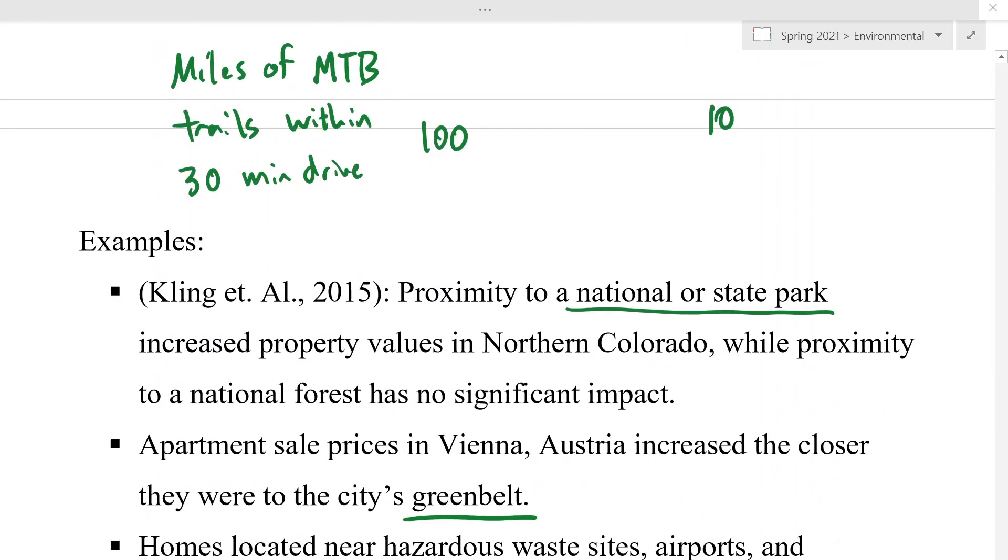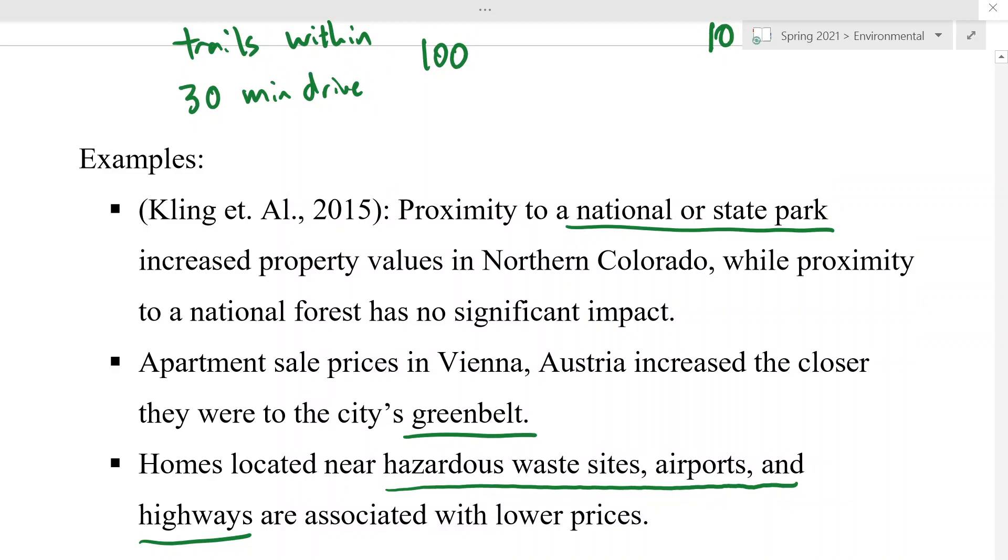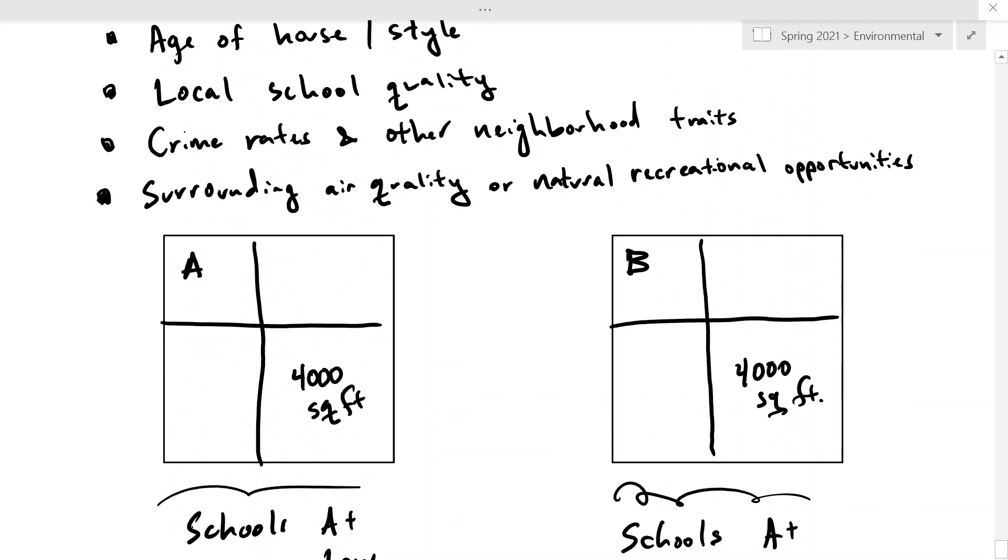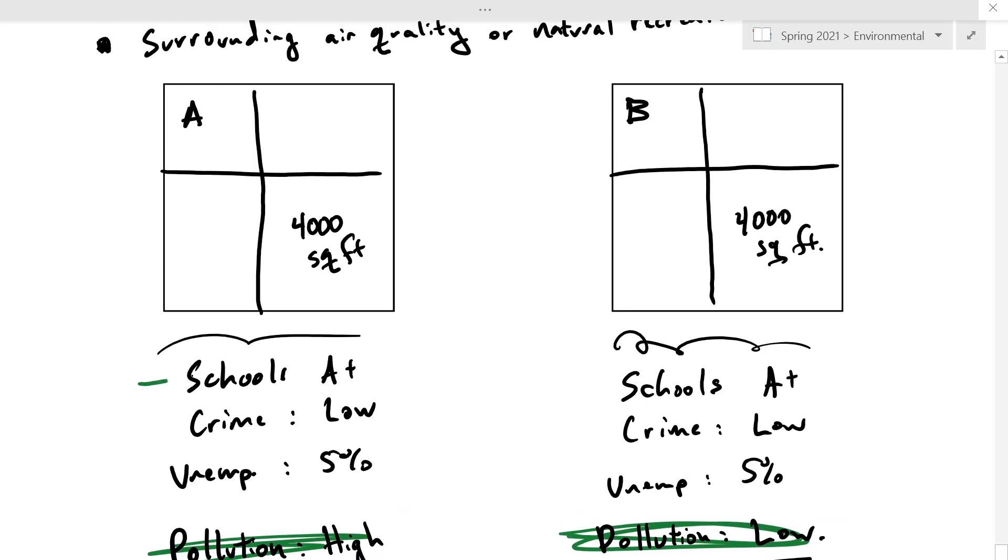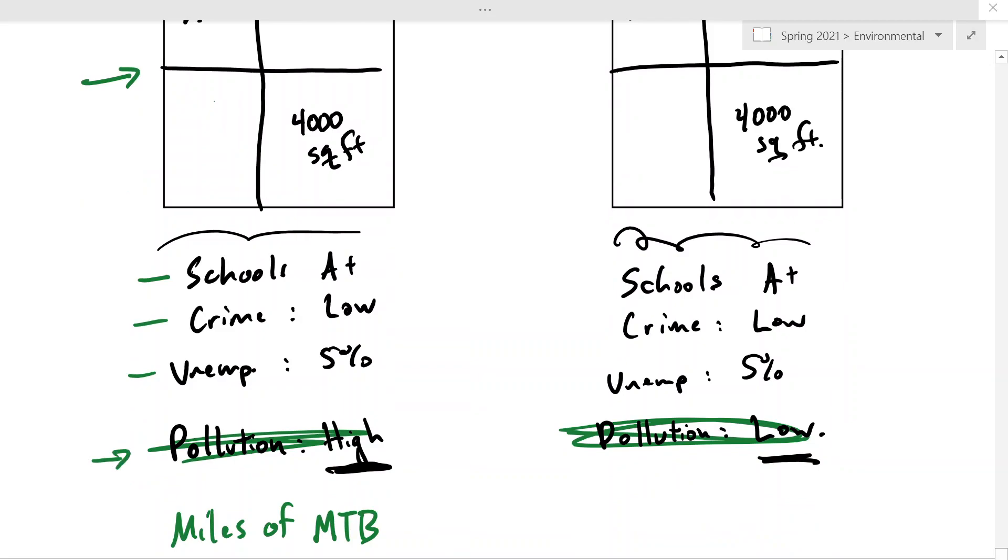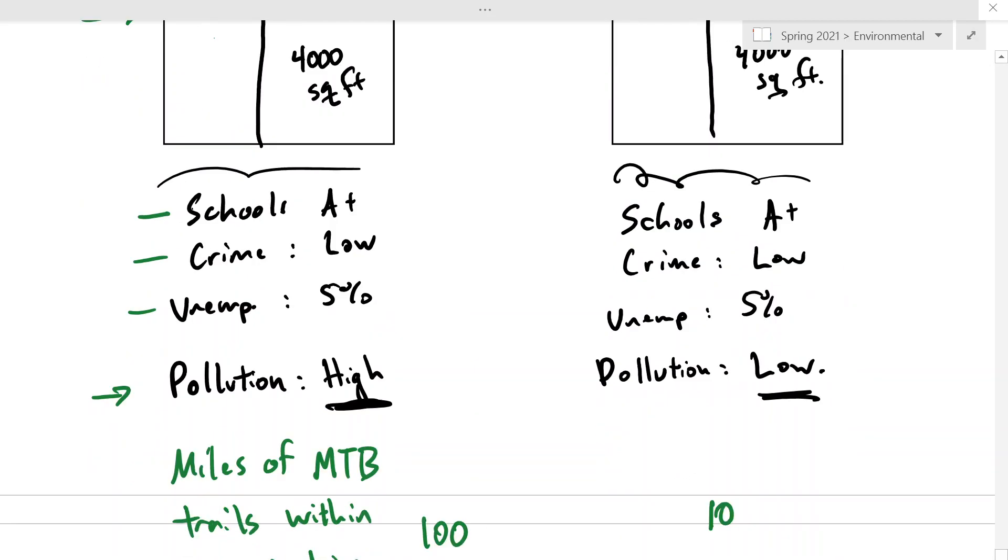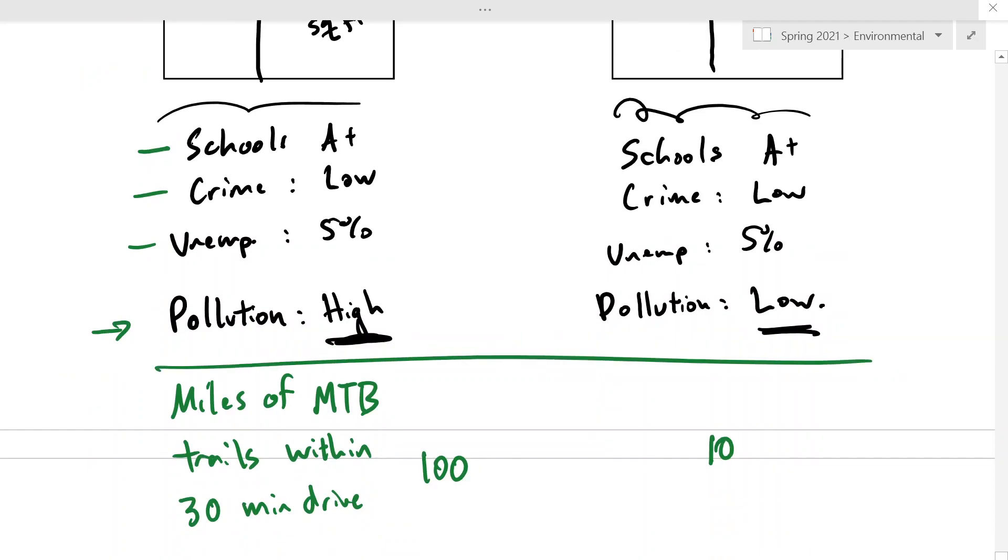So, the trick to doing this type of analysis is collecting housing price data, as well as the characteristics of the housing prices. It often involves combining lots of different data sets, so you might have to get a separate data set for the houses, number of rooms, lot size, so on and so forth, a separate data set for schools, a separate data set for crimes, a separate data set for the economic opportunities in the area, and then a separate data set for pollution levels, or a separate data set for trail level, or trails. So, in the end, the analysis is actually relatively easy to complete. In the next video, I'm going to show you an example of that, but the main trick is assembling a large data set in order to do that.